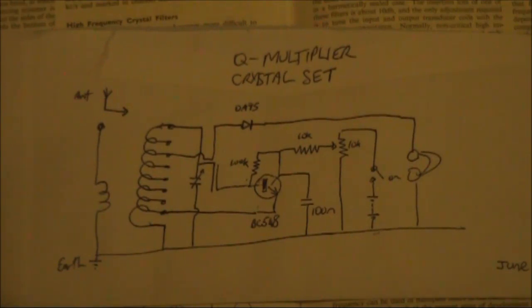Having a look at the Q-multiplier, there's not very many parts in it. Just a BC548 transistor. It could be any basic NPN transistor.